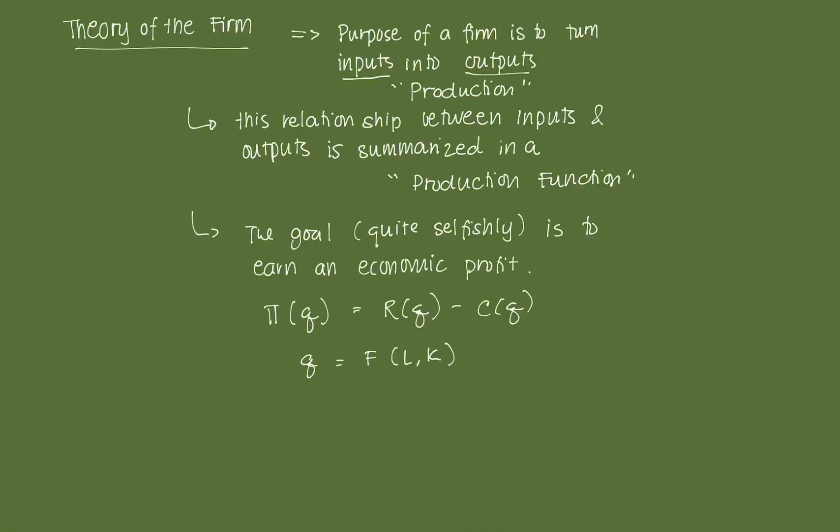Like the theory of consumer behavior, we want to summarize the firm's main behavior into some mathematical relationship — specifically, the relationship between inputs and outputs. We summarize that relationship through the use of something called a production function.